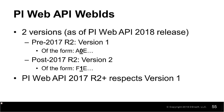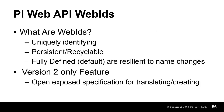However, the reverse is not true. PI Web API versions prior to 2017 R2 aren't capable of recognizing and responding to version 2 web IDs. An important note is that newer versions of the PI Web API are capable of translating version 1 web IDs and able to properly respond. For many developers, this is a sufficient basis for understanding web IDs in the PI Web API.